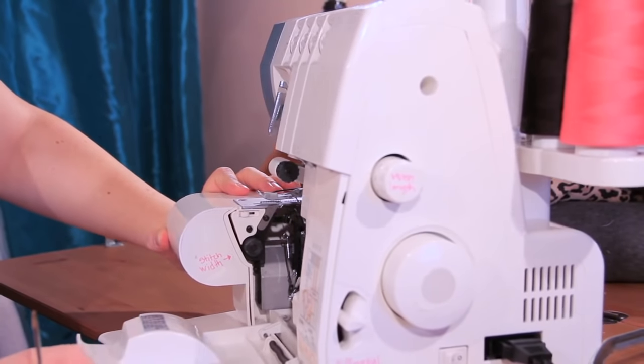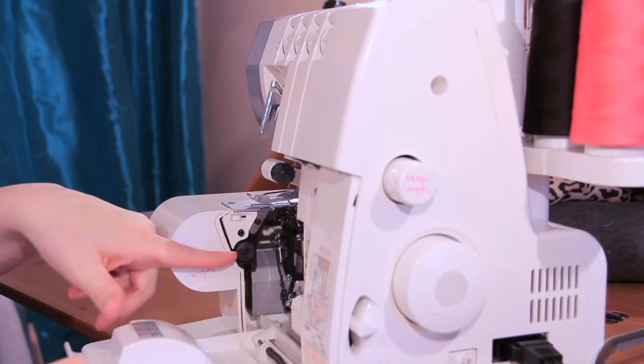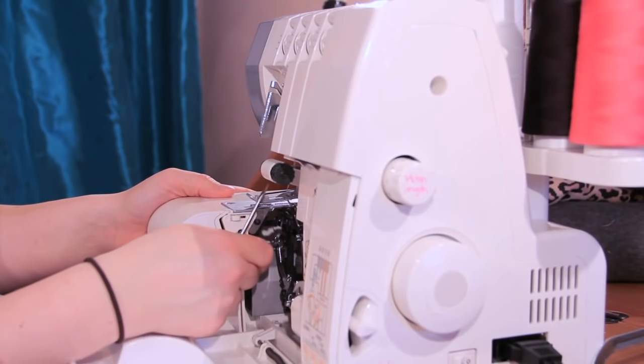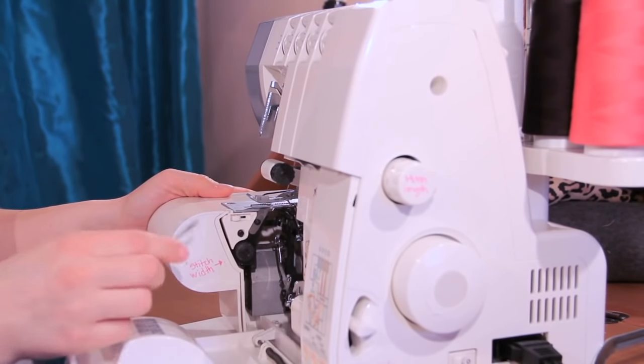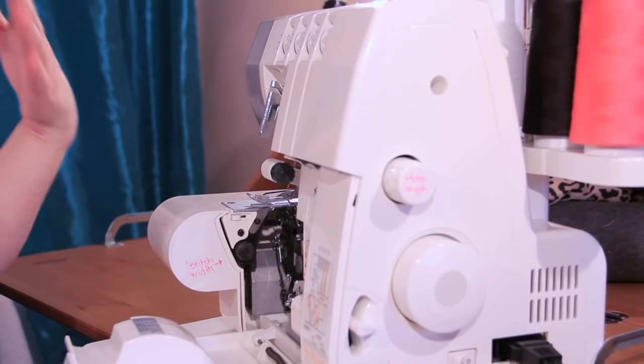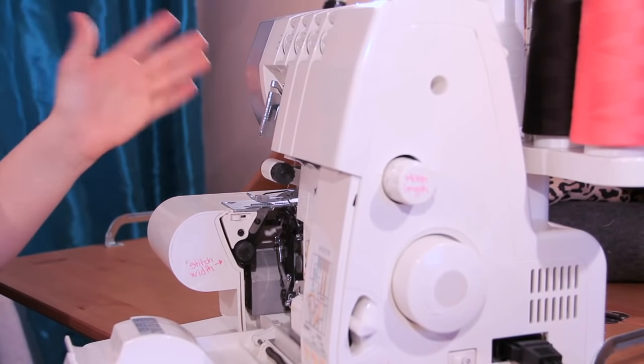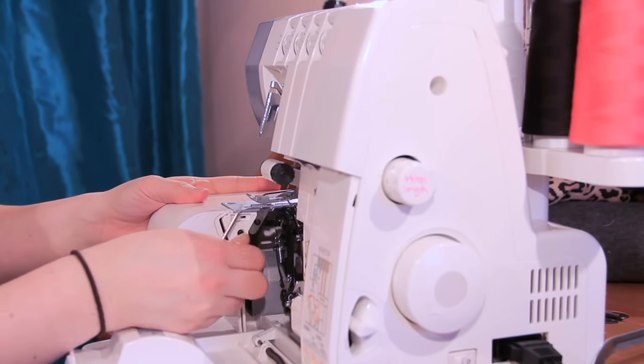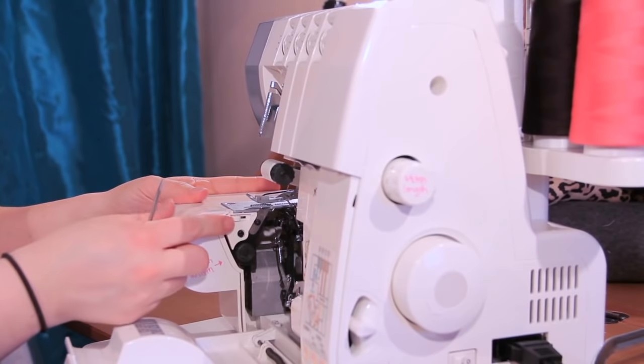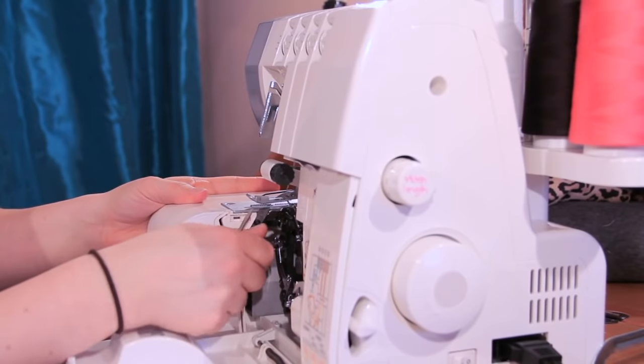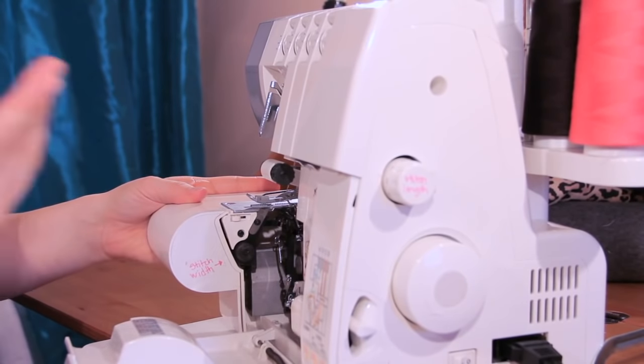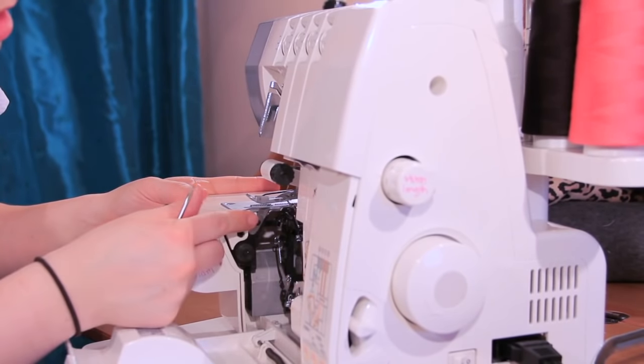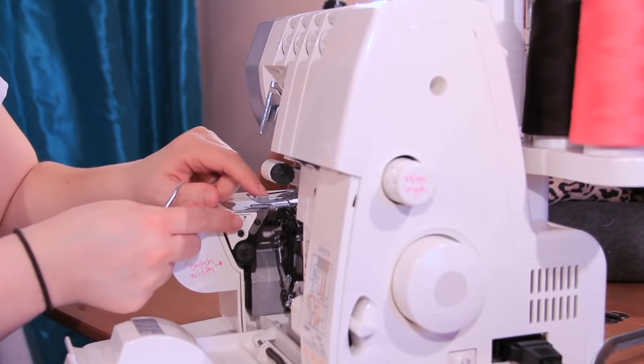Over here is our stitch width dial. I label all of my sections because there's just so many parts and so many things to think about when you're using a serger. So this is your stitch width. What it does is it moves your stitch finger which is right here out and in just like a sewing machine stitch width. You can see the little stitch finger moving.